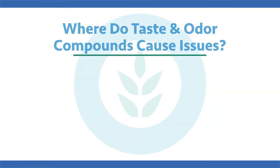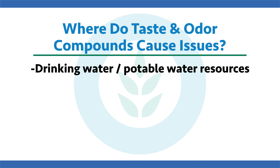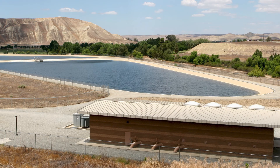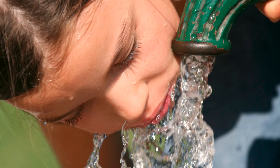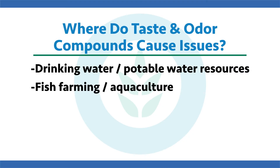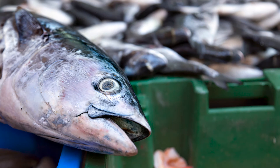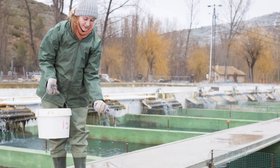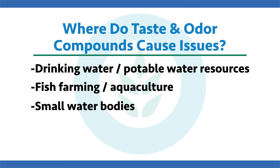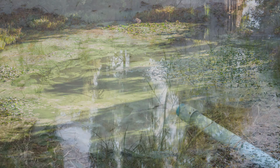So where do these algal taste and odor compounds cause issues? There are three main areas. First is drinking water sources — potable water reservoirs where these compounds make water smell bad, taste bad, and even affect your skin when you shower. Next is farm fish or aquaculture, where compounds can build up in fish or shrimp causing them to taste really bad. And lastly, there's the backyard smelly pond, the HOA pond, or the golf course pond that smells bad and no one wants to be around.